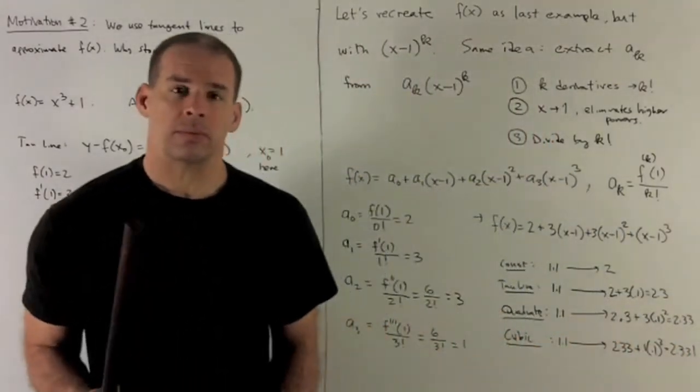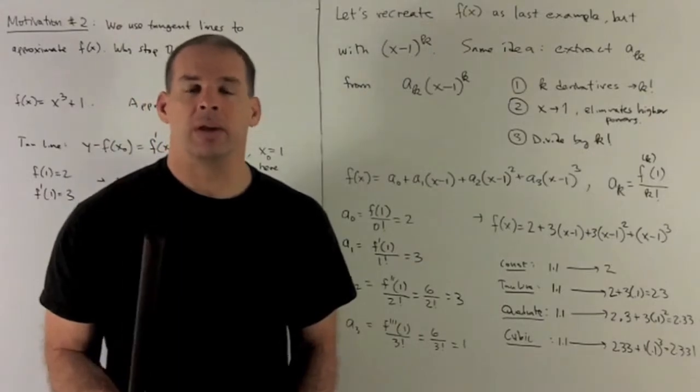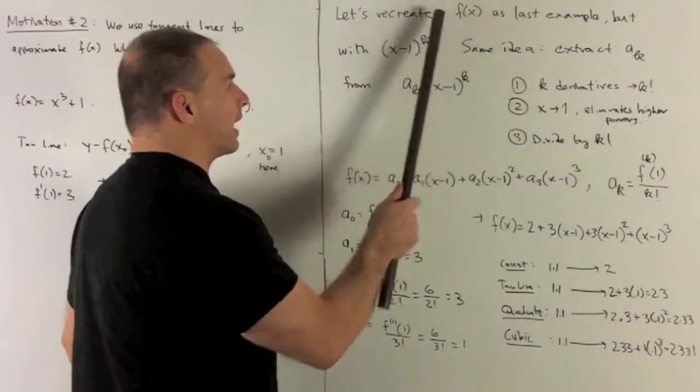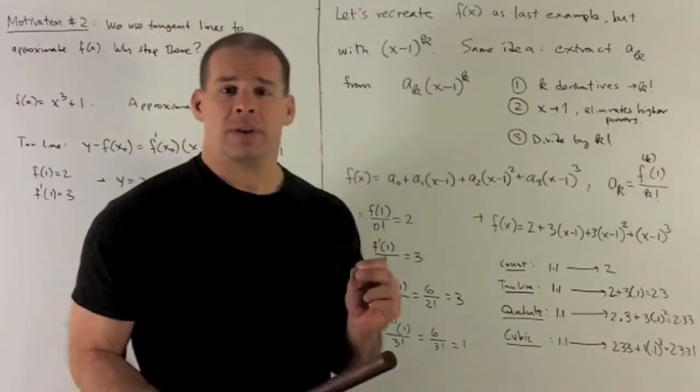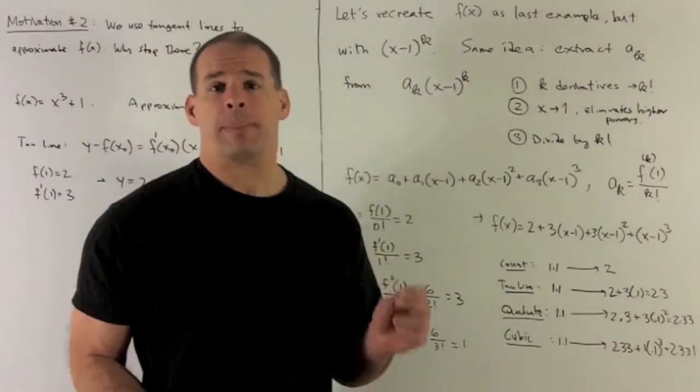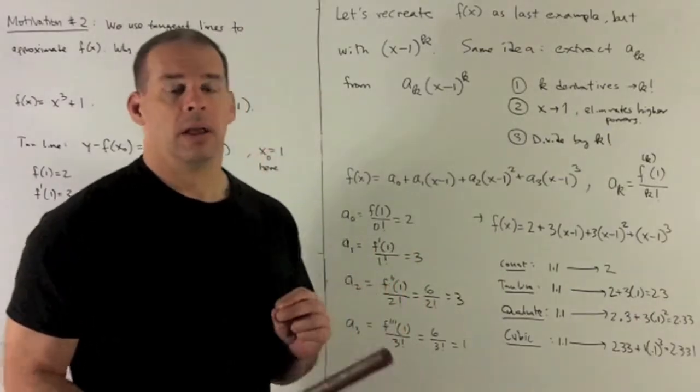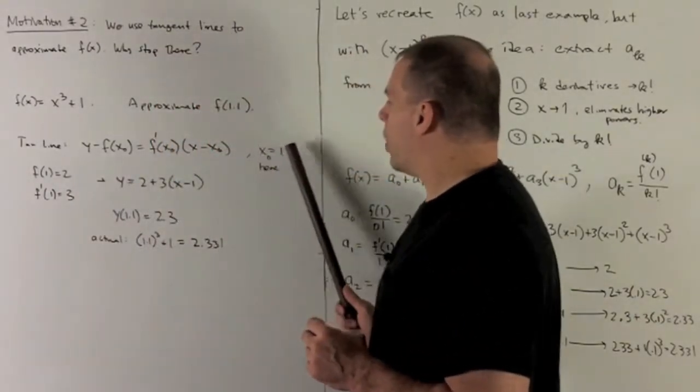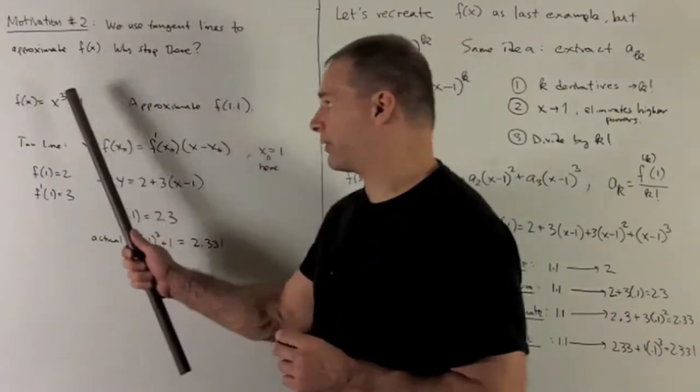Let's motivate this using motivation 1. I want to recreate my f(x) as in the last example, but instead of getting powers of x, I want powers of x minus 1. Why is that? Because we're using this point 1 as a point that's going to be nice for our function.